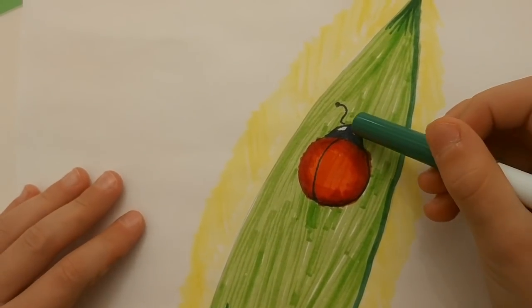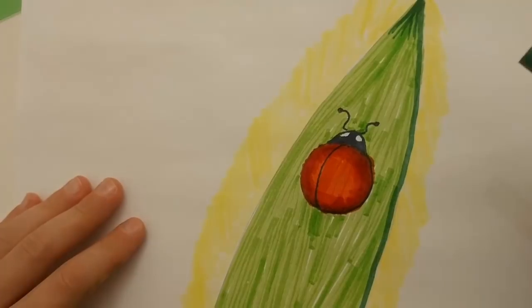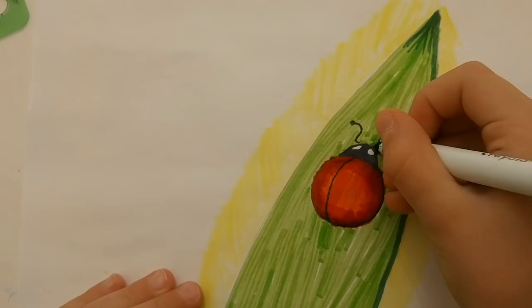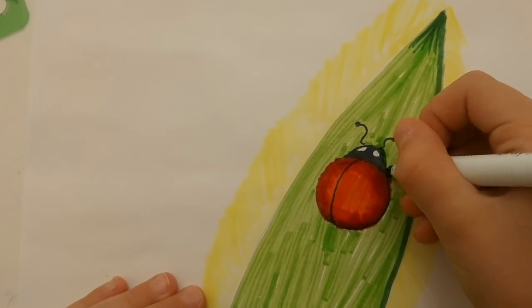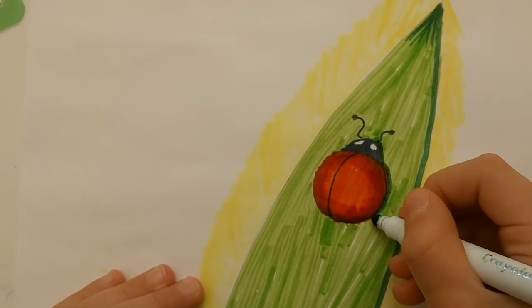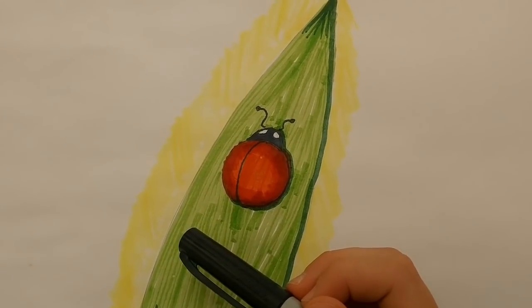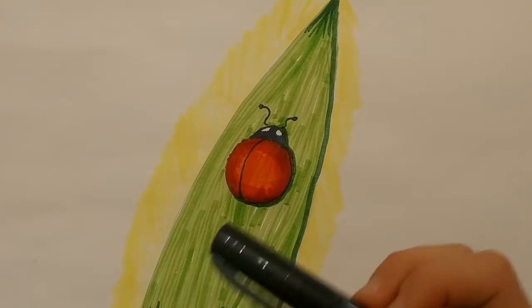Trace one side of the ladybug with dark green to make shade. Color the spots with black.